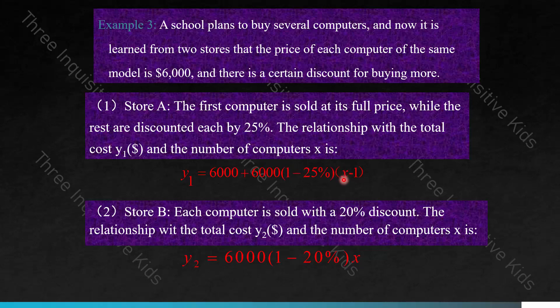For store B, Y2 equals 6,000 times (1 minus 20%) times X, since every computer is sold with a 20% discount applied to the $6,000 price, multiplied by the total number of computers X. Now that we have our two linear functions, we need to transform and substitute them into a linear equation and inequality.